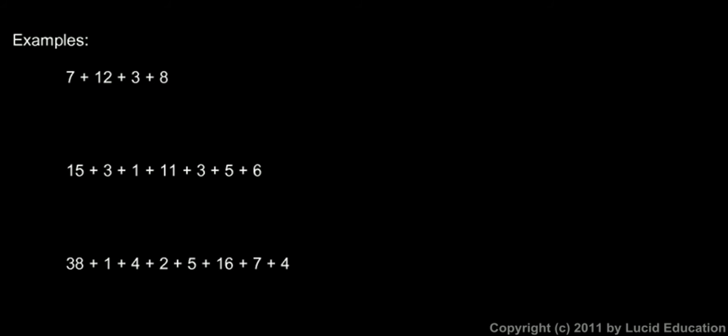Like right here, 7 plus 12 plus 3 plus 8. Instead of just adding 7 and 12 and then adding 3 and then adding 8, I look at the numbers for a second and I notice, hey, the 7 and the 3 add up to 10. So I'm going to underline those to keep track of things and just write the 10. I've got 10 so far, underline. And then I have 12 and 8, and I can see that those add up to 20. So I have another 20. And then 10 plus 20, that's pretty easy to do in your head. 10 plus 20 is 30.